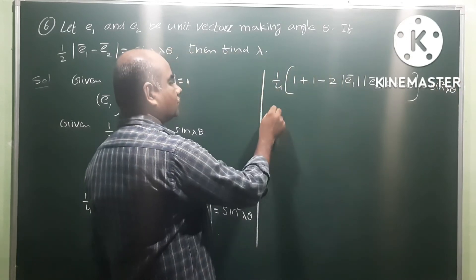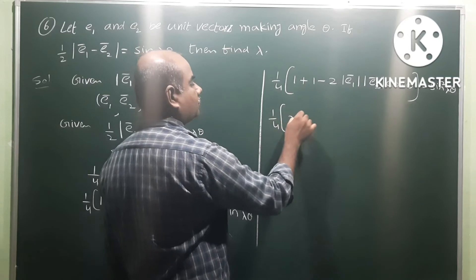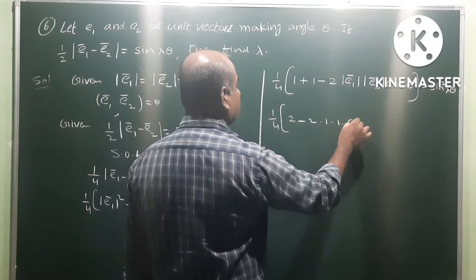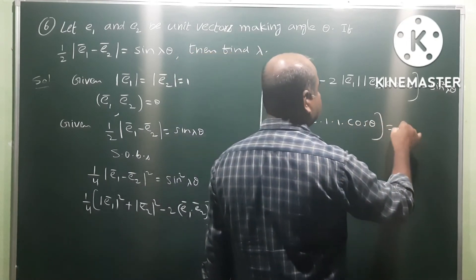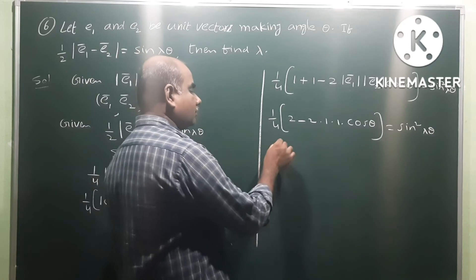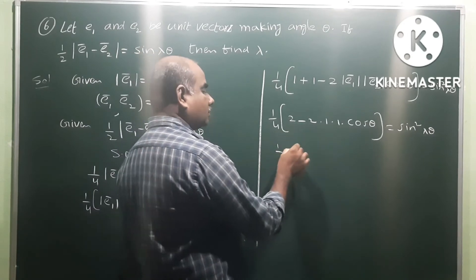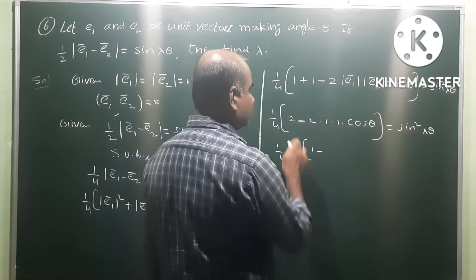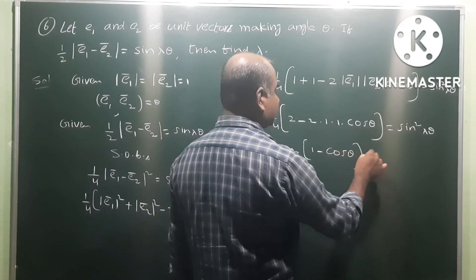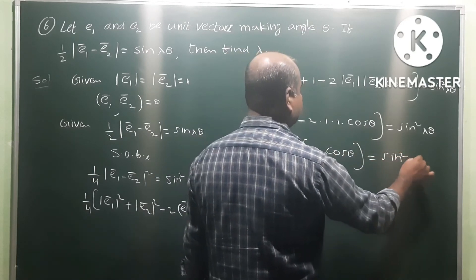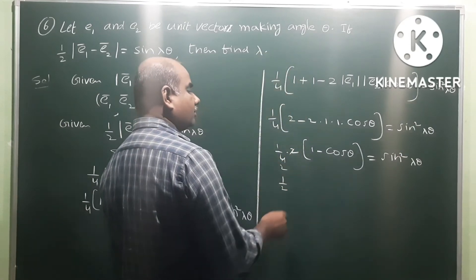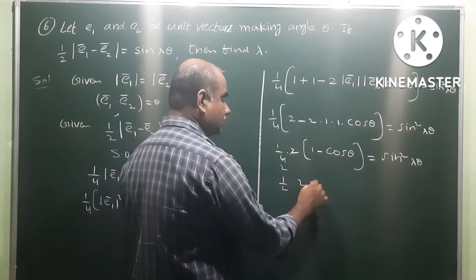So 1/4 times (1 plus 1 minus 2 times mod(e1) times mod(e2) times cos(theta)) equals sin squared(lambda*theta). Since both are unit vectors, this simplifies to 1/4 times (2 minus 2*cos(theta)), giving 1 minus cos(theta) equals sin squared(lambda*theta).